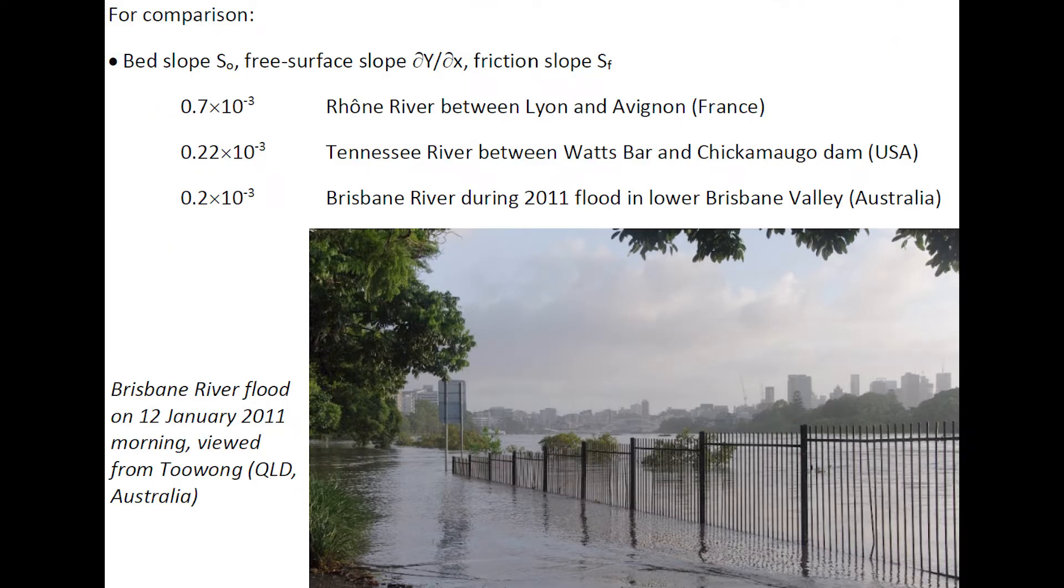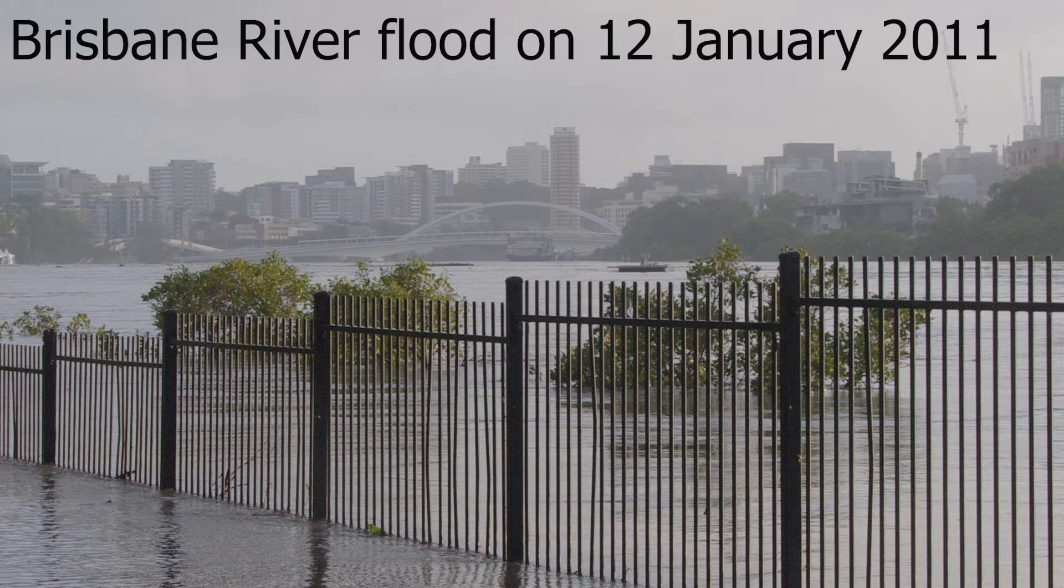For comparison, the bed slope, free surface slope, and friction slope in large rivers during large floods is of the order of 0.7 times ten to the minus three for the Rhone river, 0.22 times ten to the minus three for the Tennessee river, and 0.2 times ten to the minus three for the Brisbane river.